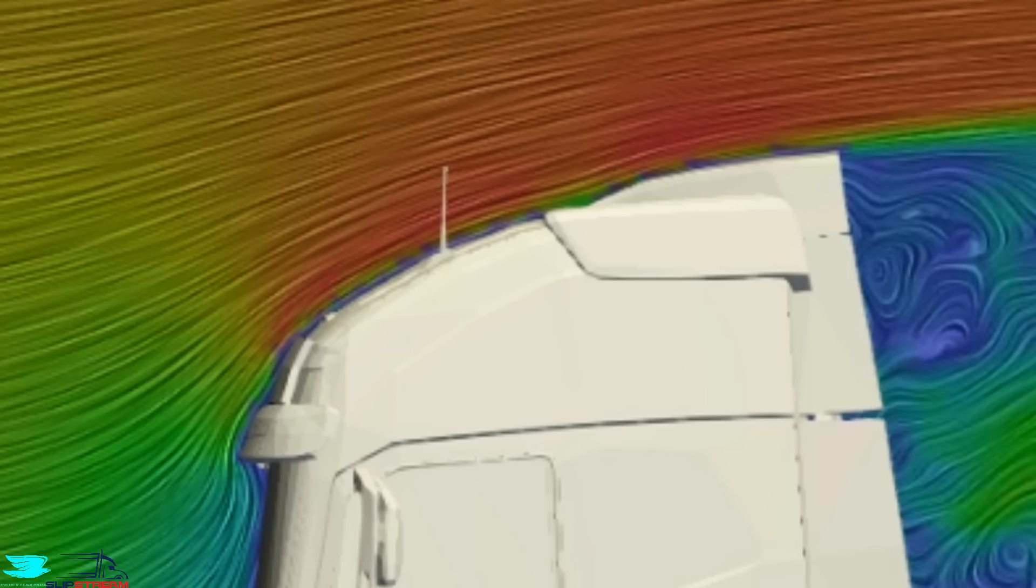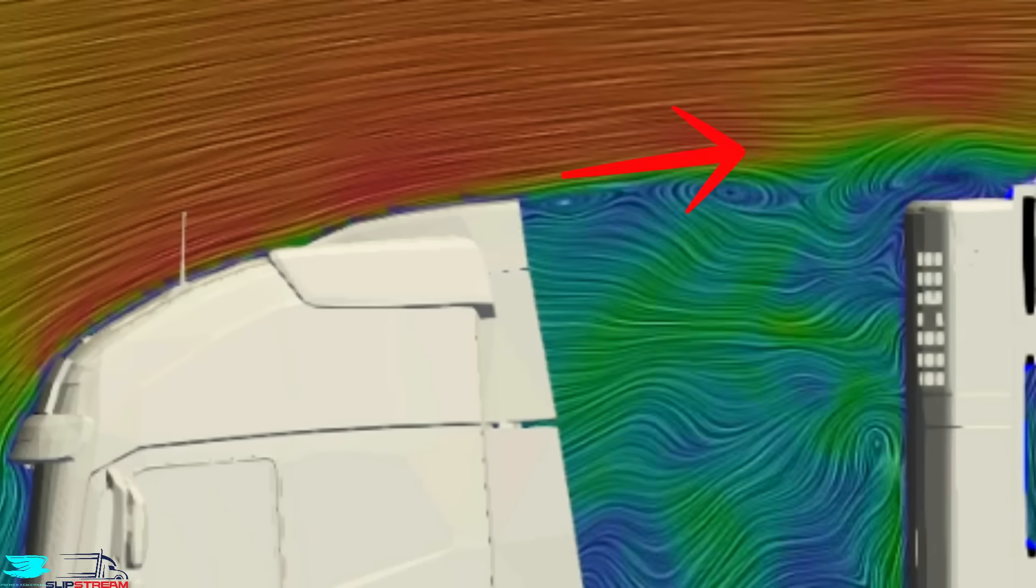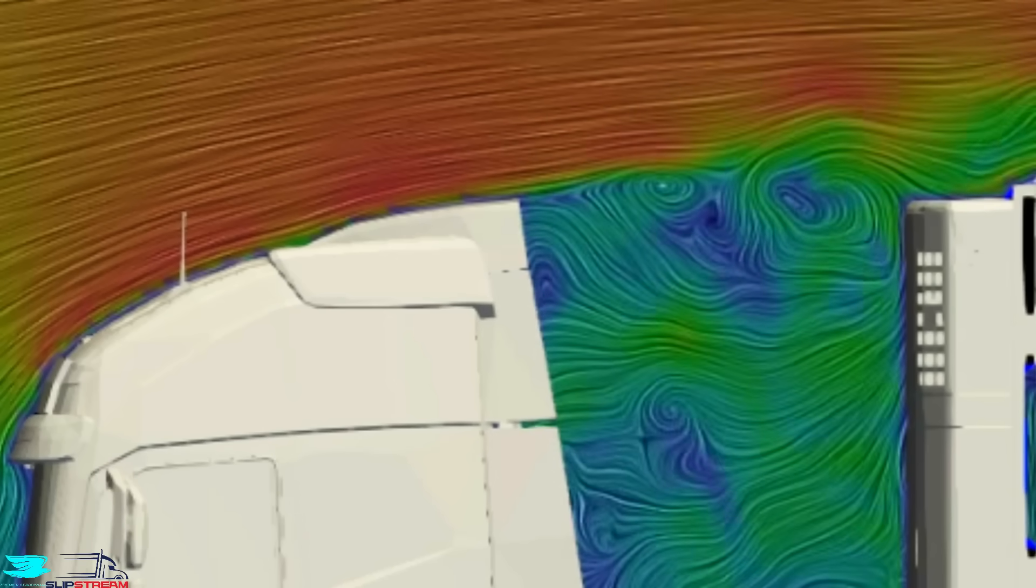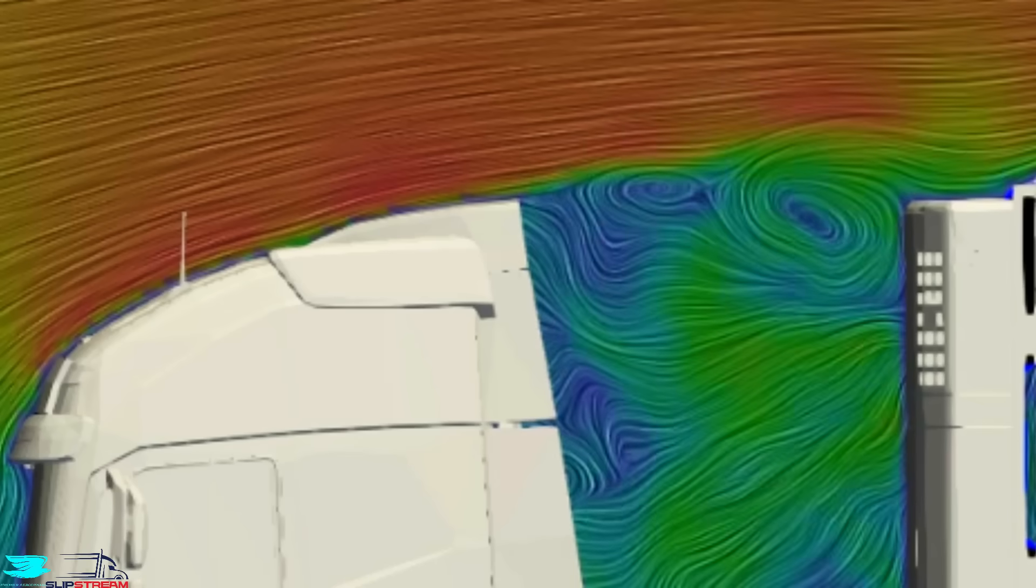The top of the cab is really good though, the flow is attached impressively well. That gives the rear flared section of the cab great flow to work with and hopefully direct it in the best possible way. Here, it is almost perfect, but what we see is actually how this little section can't function 100% well just by itself.